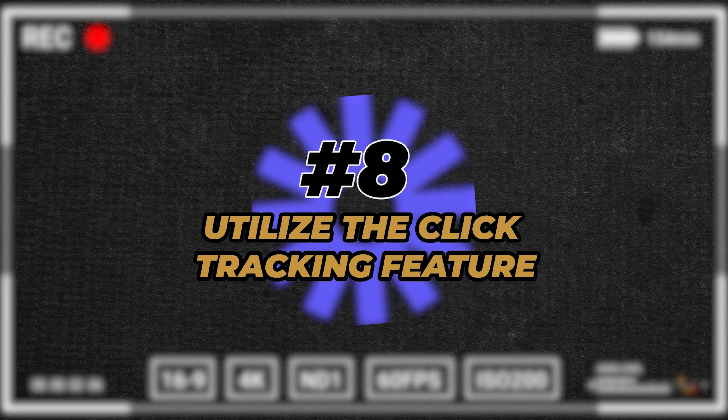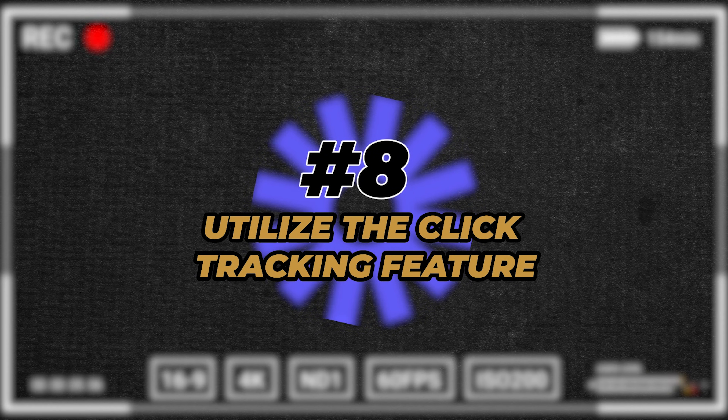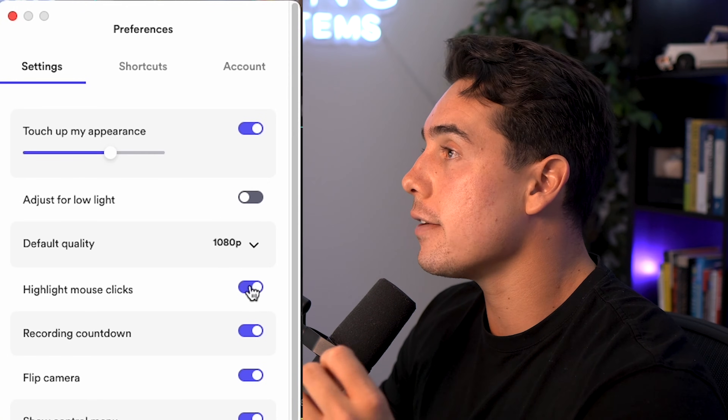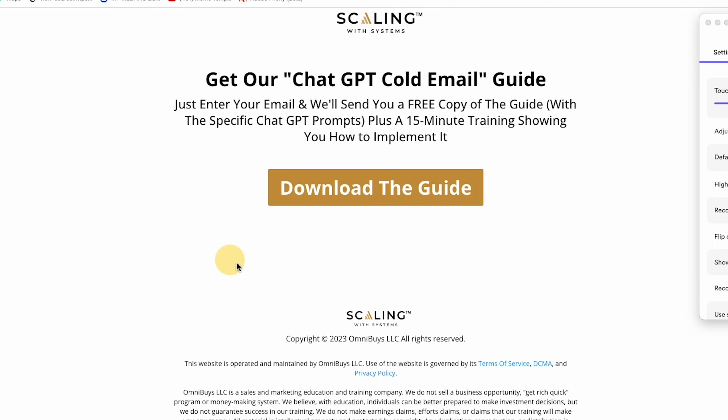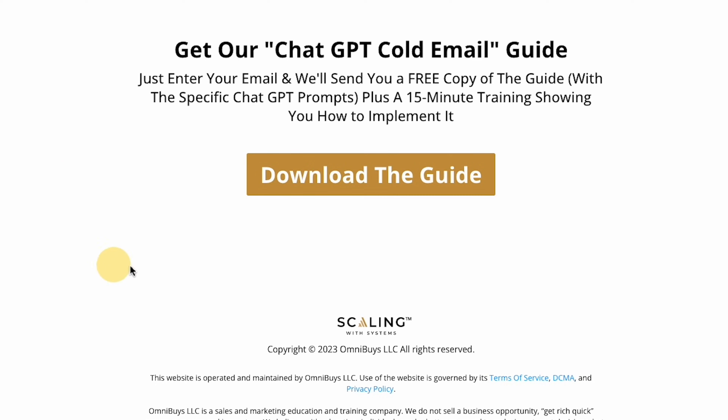Number eight is only for paid Loom users using the desktop app, but if you're using Loom frequently in your business, it's definitely worth it. It's called Loom's click tracking feature, and essentially it highlights wherever you are clicking on the screen recording. I shoot dozens of screen recordings for YouTube, and feedback I've received is that it's sometimes difficult to see where I'm clicking. With this feature, a big yellow highlighted circle pops up wherever I click, letting the viewer know exactly where they should be looking.